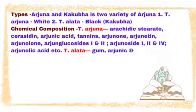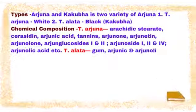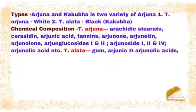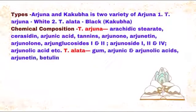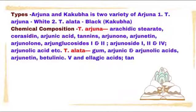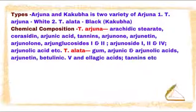Chemical composition of Terminalia Alata: Gum, Arjunic and Arjunolic acids, Arjunatin, Oleanolic acid, Ellagic acid, and Tannins.